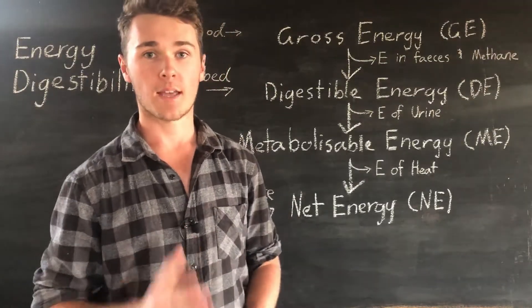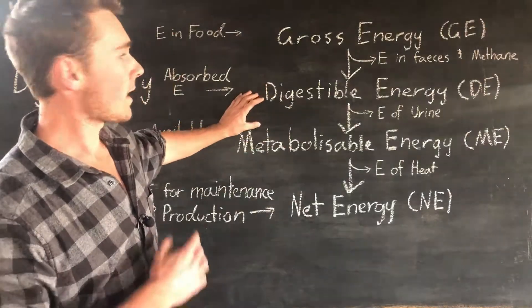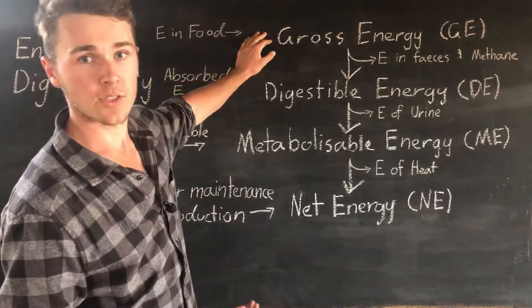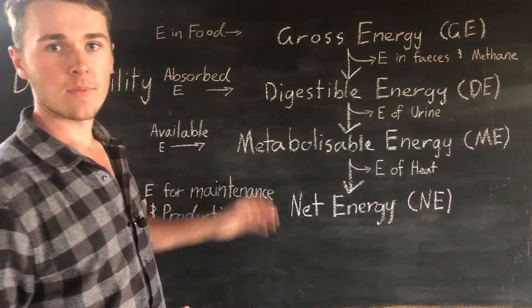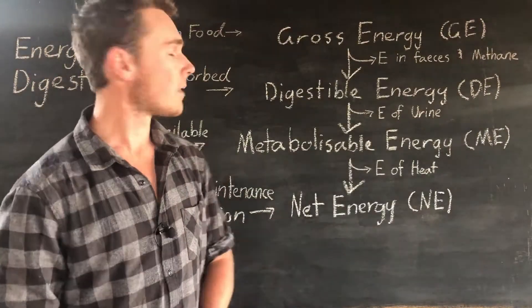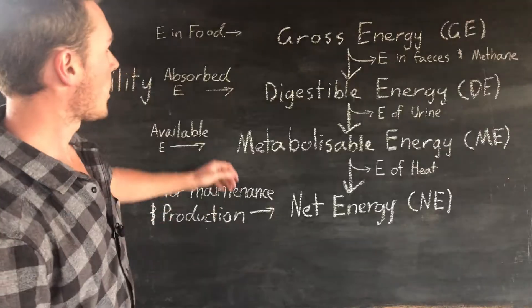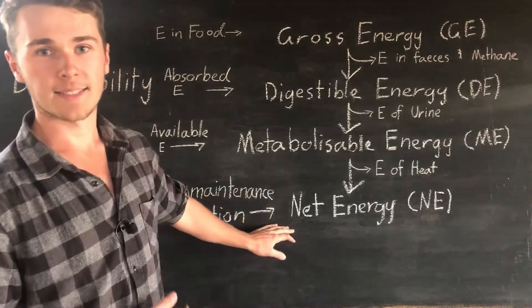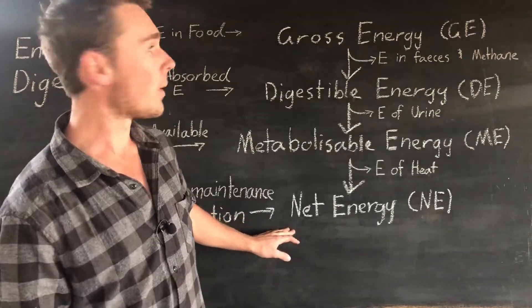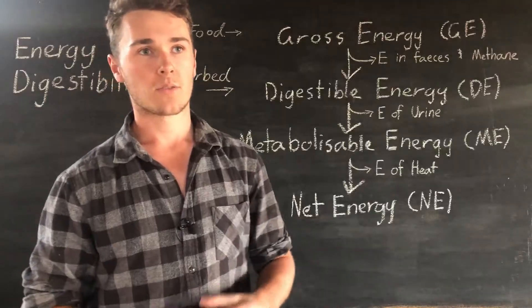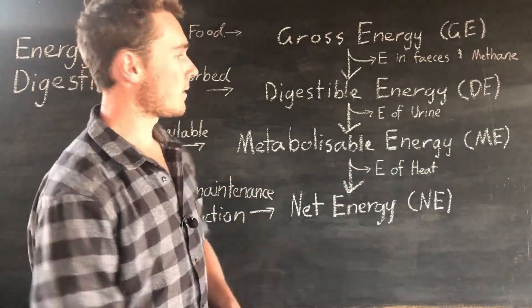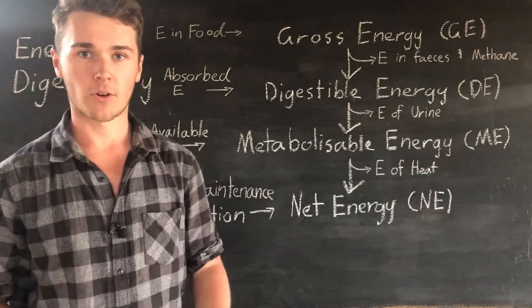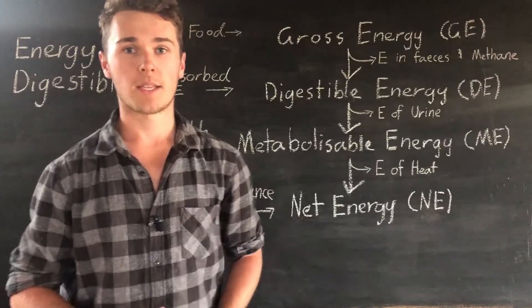So it's important to understand these different categories of energy because it allows us to understand these different terms. So if someone's referring to energy as gross energy but you're thinking it's metabolizable energy, then there's going to be a discrepancy in what you're talking about. So say on a feed label it might have gross energy, but you're comparing it to, say, a feed label that has net energy. Well, obviously the net energy is going to be lower than your gross energy. And so it's really important to understand how these different energies affect our animals, because otherwise we're going to be comparing apples to oranges.